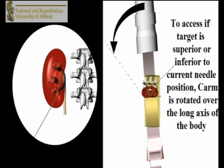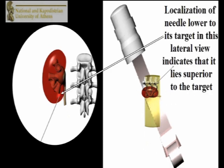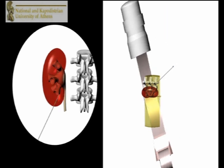The C-arm image intensifier is repositioned 30 degrees from the vertical position towards the head for an oblique view. This gives a side view of the needle rather than a view from above.